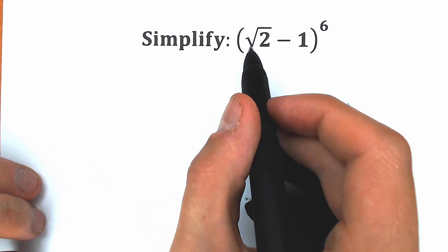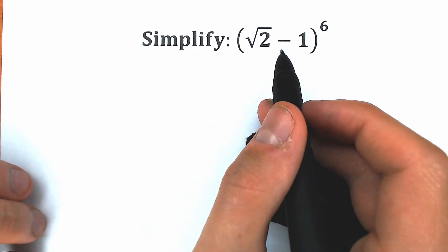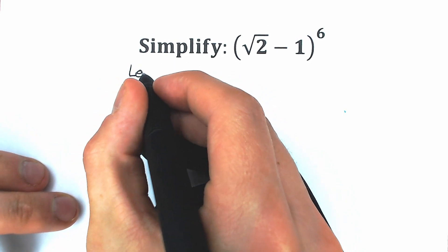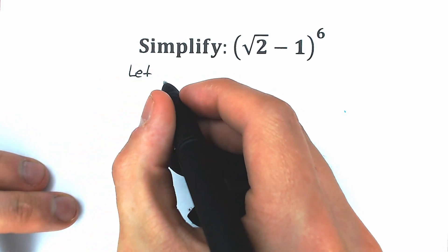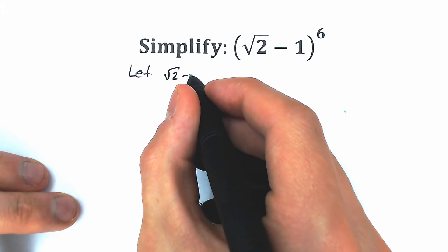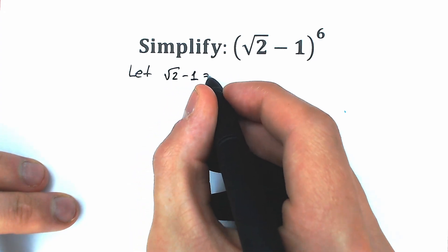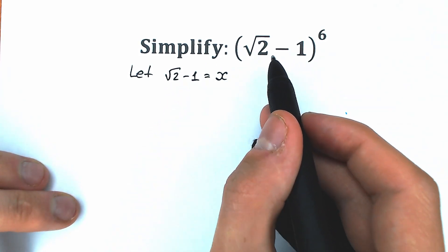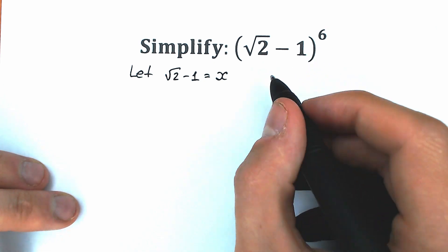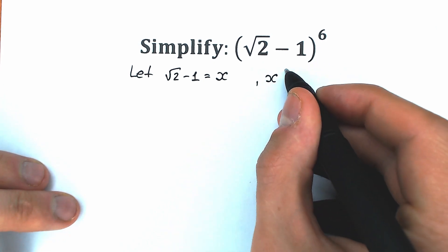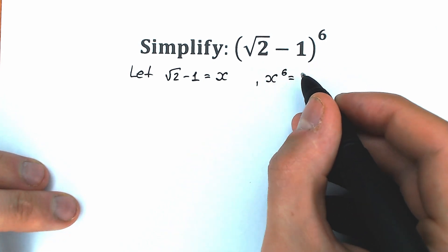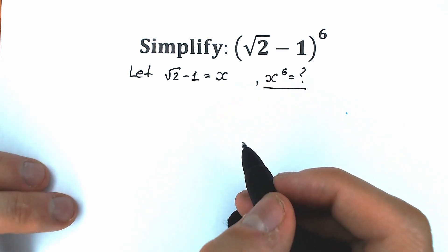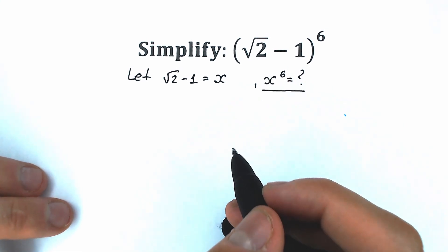First of all, let's call this square root of 2 minus 1 as x. So we write square root of 2 minus 1 equal to x. And basically if this equals x, we need to find x to the 6th power. So x to the 6th power is the expression we need to find.